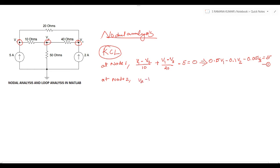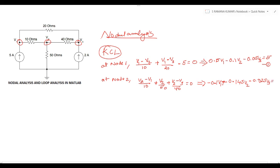Similarly, we apply KCL at node 2. The equation is: (v2 - v1)/10 + (v2 - v3)/40 = 0. After simplification, we get -0.1·v1 + 0.145·v2 - 0.025·v3 = 0. Let this be equation 2.